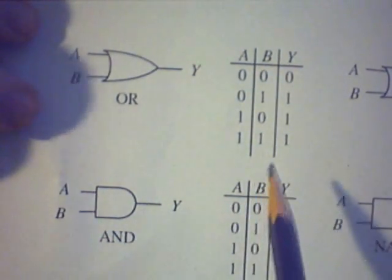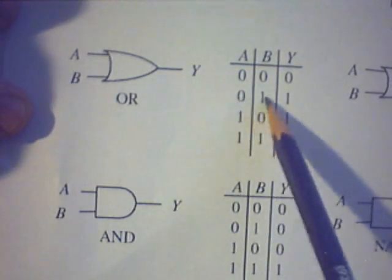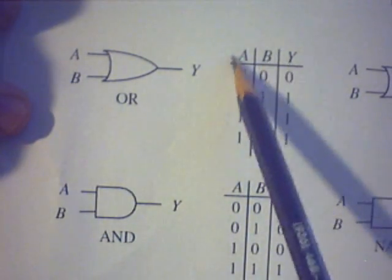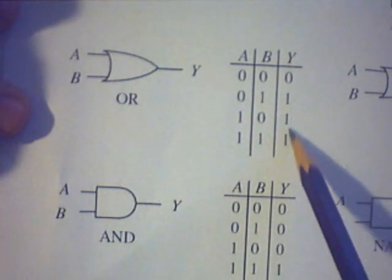And an OR gate basically says that if either or both of the inputs are high, then the output is high.